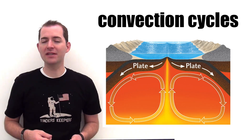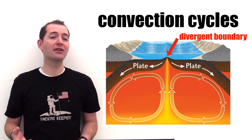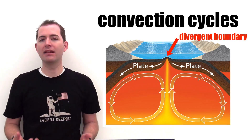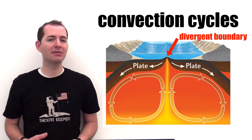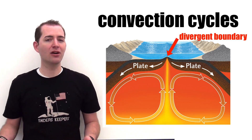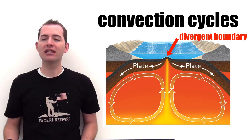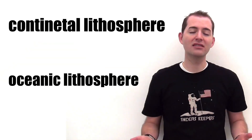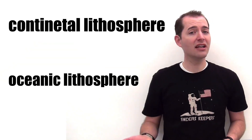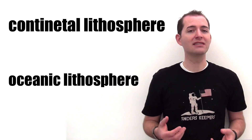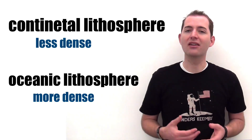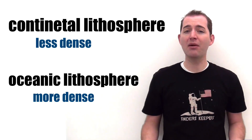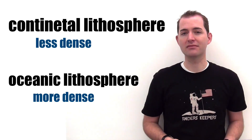As the lithosphere splits apart at what is known as a divergent boundary, it creates new crust. These divergent boundaries typically take place in the middle of oceans and happen underneath oceanic lithosphere. There is also continental lithosphere, and continental lithosphere is typically less dense than oceanic lithosphere. This will come into play when we talk about slab pull.